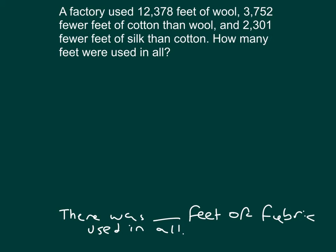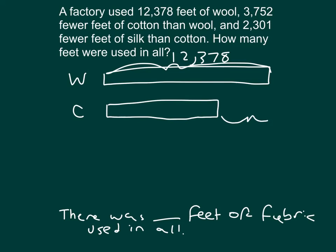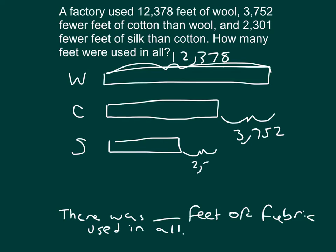One of our knowns is that we have three different types of fabrics. One of those is wool and we know that it's 12,378 feet of wool. Our next clue is that we have 3,752 fewer feet of cotton than wool, so cotton is smaller than wool by 3,752 feet. Finally, silk is 2,301 fewer feet than cotton, so silk is smaller than cotton by 2,301.